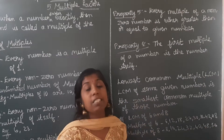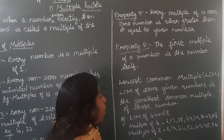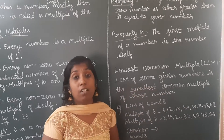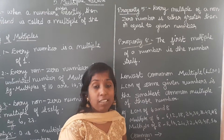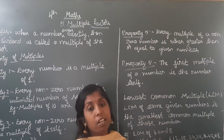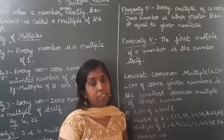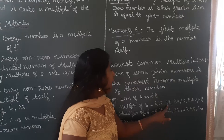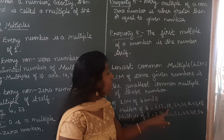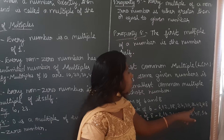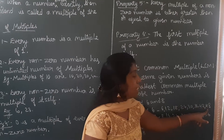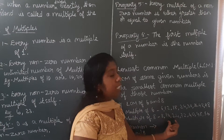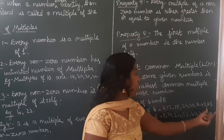Lowest common multiple means LCM. The LCM of some given numbers is the smallest common multiple of those numbers. We have to check the common number between any two numbers. For example, LCM of 6 and 8 — first write the multiples of 6: 6, 12, 18, 24, 30, 36, 42, 48. Then write the multiples of 8: 8, 16, 24, 32, 40, 48, 56 — like that.